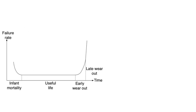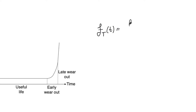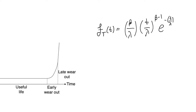Surprisingly, there is a single mathematical function that represents all three phases in the life of a product, and this is the Weibull function. We can use it to write a probability density function: f(t) = (β/λ) · (t/λ)^(β−1) · e^(−(t/λ)^β). Here, t is the variable of this PDF and it represents time. So f(t) is basically the probability that we will have a failure at time t.